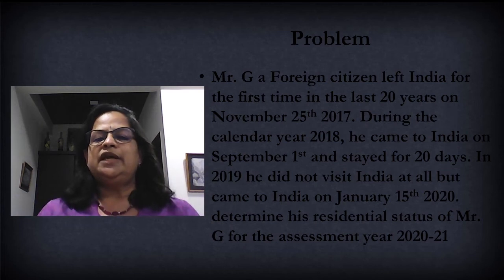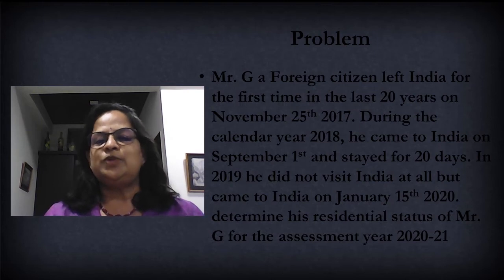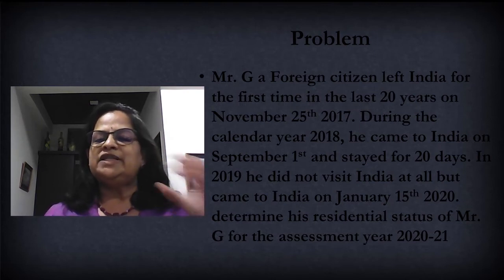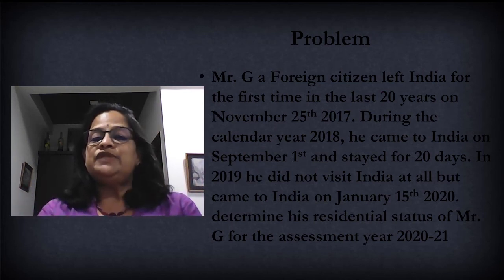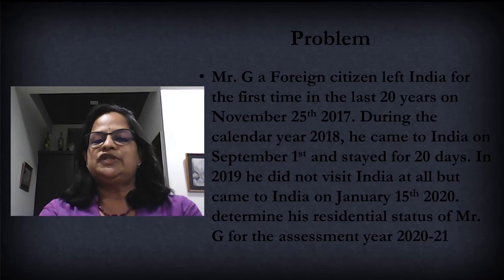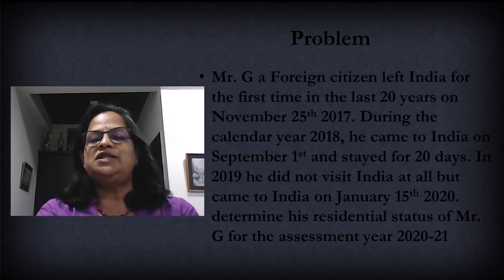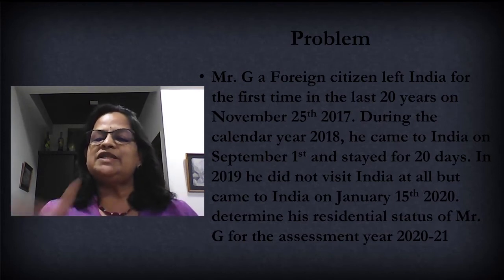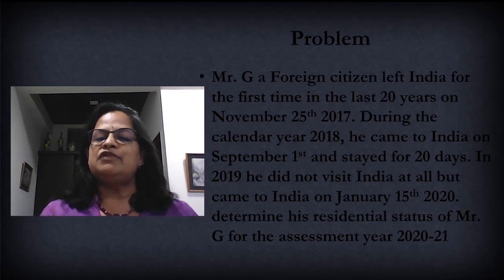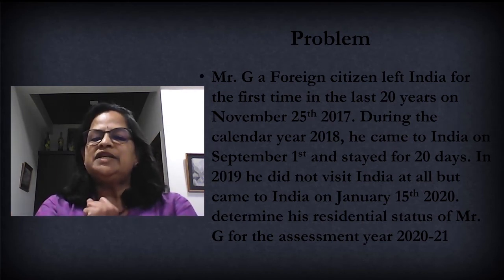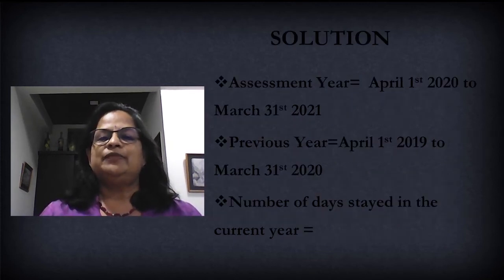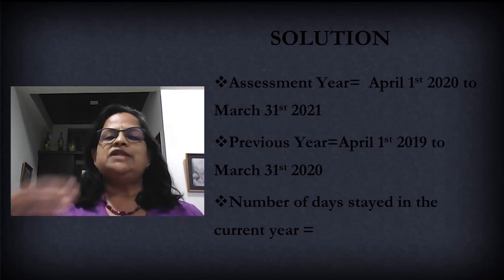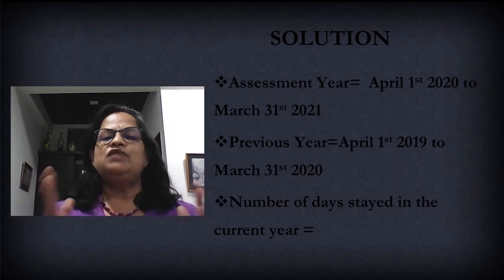In 2019 he did not visit India at all, but came to India on January 15, 2020. So the number of days stayed in the current previous year we will calculate from January 15th to March 31st, because in 2019 he was not there in India. Determine his residential status for the assessment year 2021. As usual, you write which is your assessment year and which is your previous year.